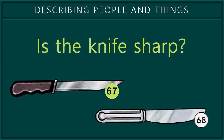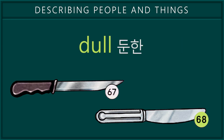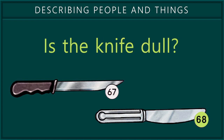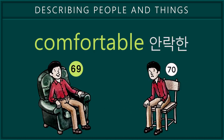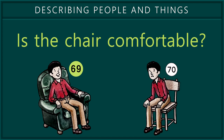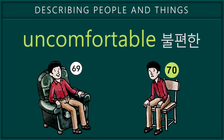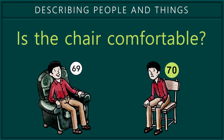67. Sharp. Is the knife sharp? 68. Dull. Is the knife dull? 69. Comfortable. Is the chair comfortable? 70. Uncomfortable. Is the chair uncomfortable?